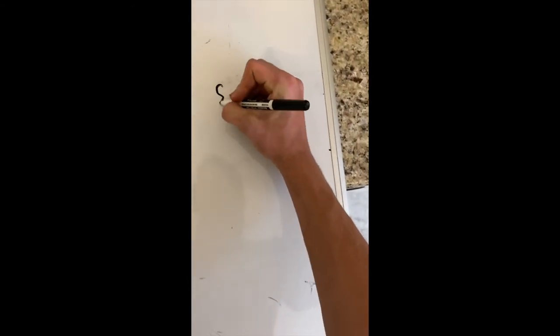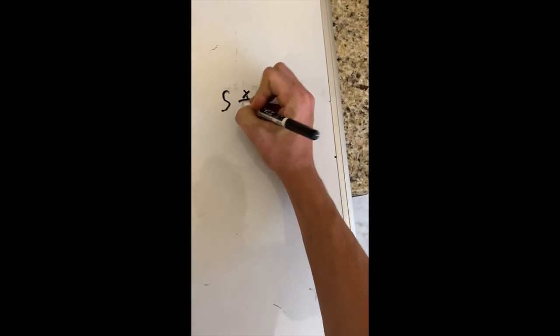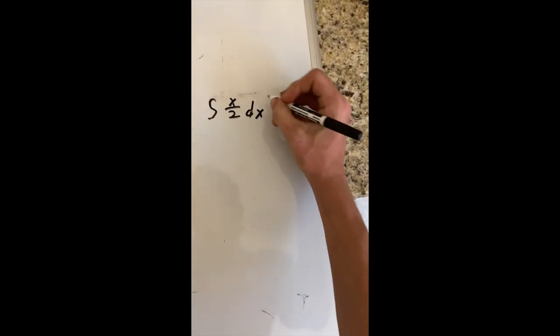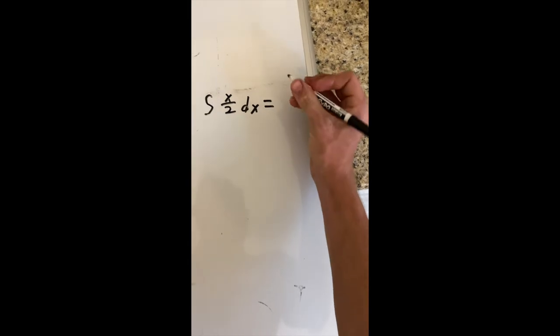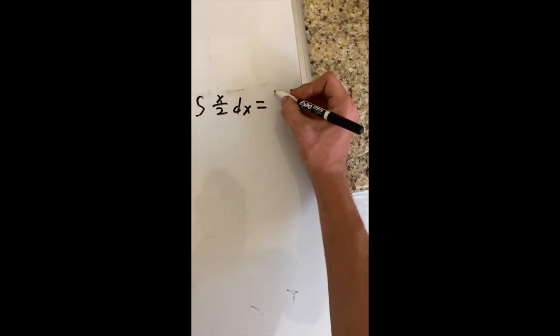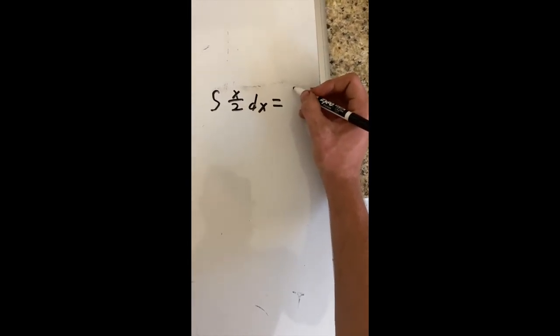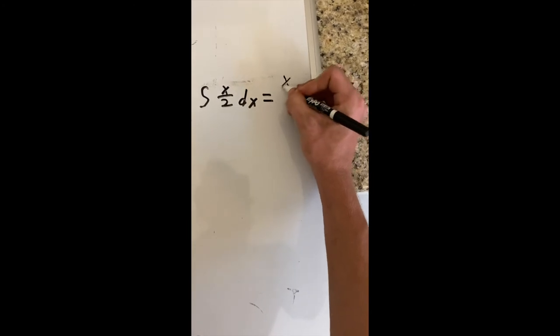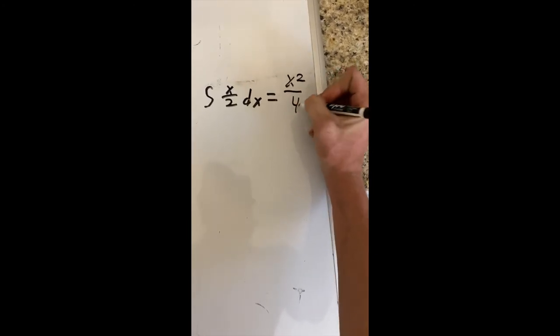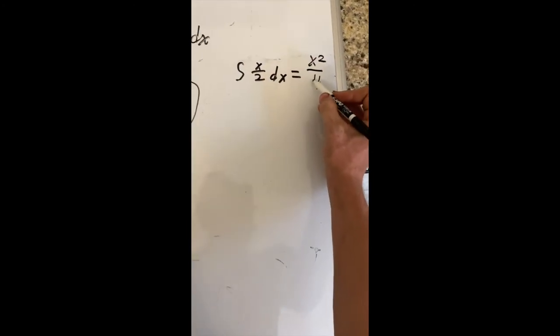So, the integral of x divided by 2 dx. You just use your calculator. Or, you know, simple... Don't use that. And that's going to be x squared divided by 4. So now I have these parts.